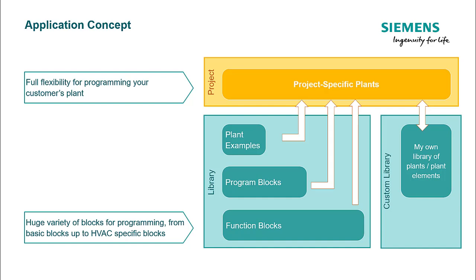Or, function blocks can be used for more detailed instructions — for example, they can have internal logic and calculate the corresponding output signals based on the input signals. Function blocks are available in the library for all common functions on an HVAC plant.